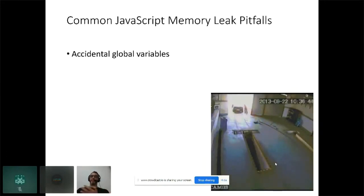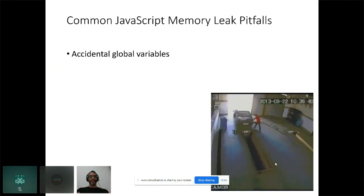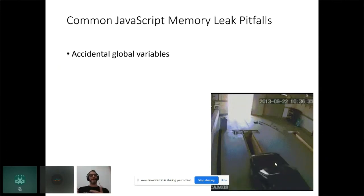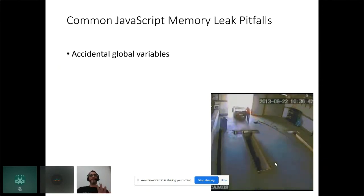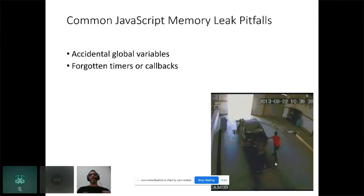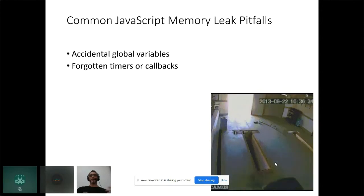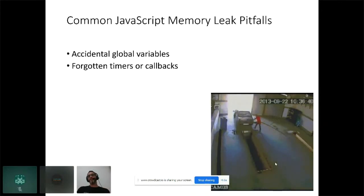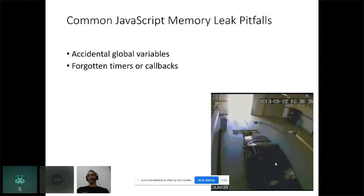Here are common JavaScript memory leak pitfalls. First: accidental global variables — when you don't use let, var, const, or another declaration keyword. This is easily detected by linters and avoided by using 'use strict' in your JavaScript code. Second: forgotten timers and callbacks — if you start an interval with setInterval it gives you a handle you can use to clear it, but if you forget, that callback will continue running indefinitely.